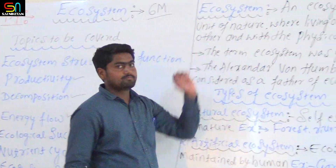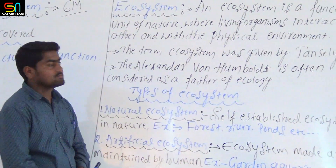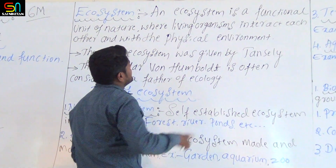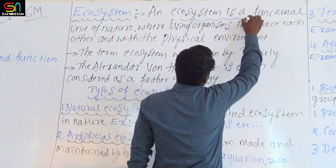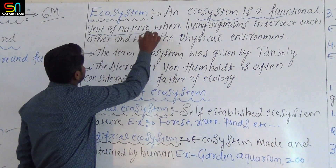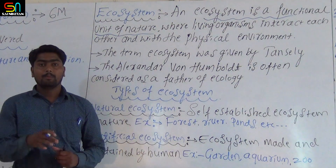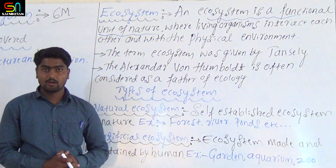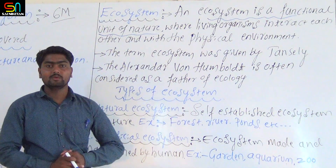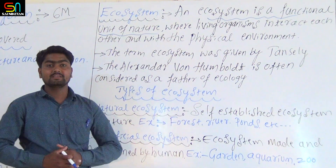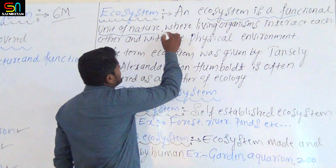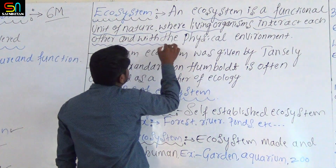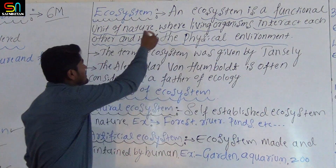What is an ecosystem? Ecosystem is nothing but a functional unit of nature. Why is it called a functional unit of nature? Because here living organisms interact with each other and with their physical environment. That is called an ecosystem.